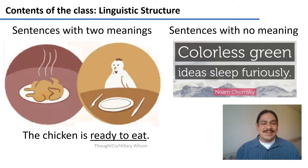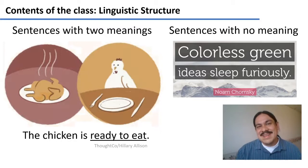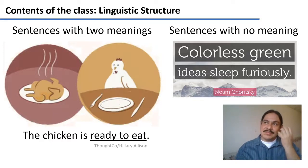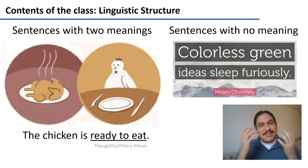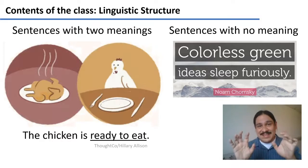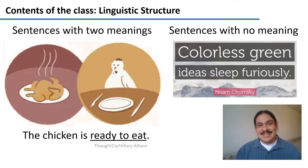For example, in 'the chicken is ready to eat,' that sentence can mean two things — the one on the left, the one on the right — and we'll study what the structural difference is between these two. We'll also look at the relationship between structure and meaning, because they don't always come together. You can have something that has a perfectly good English structure with no meaning, like 'colorless green ideas sleep furiously' — a sentence that is perfect, except that it means nothing.